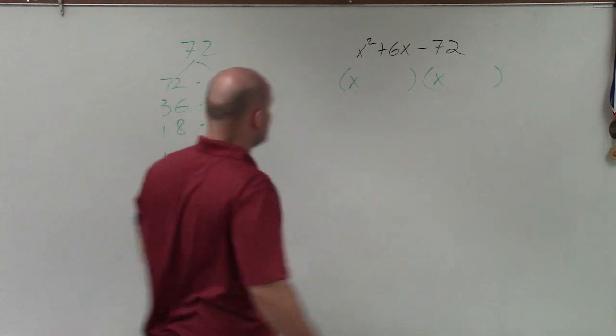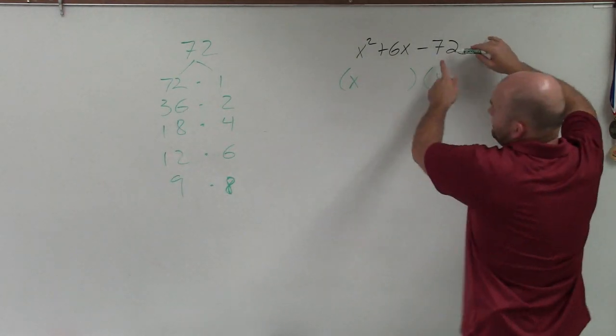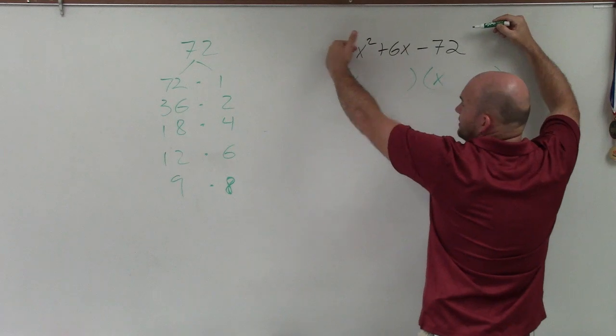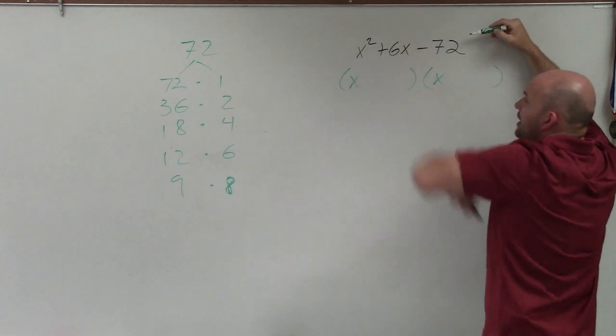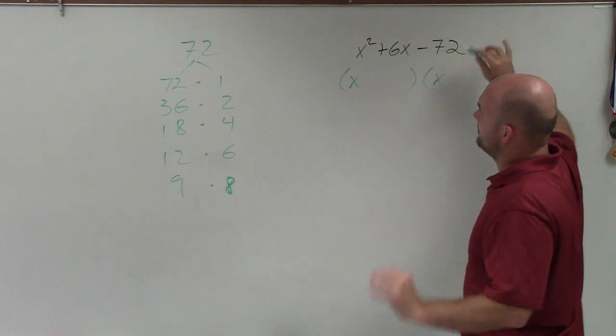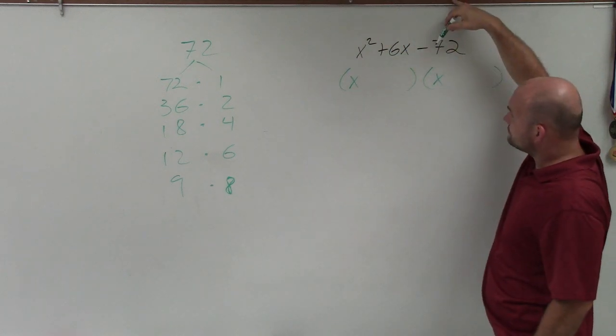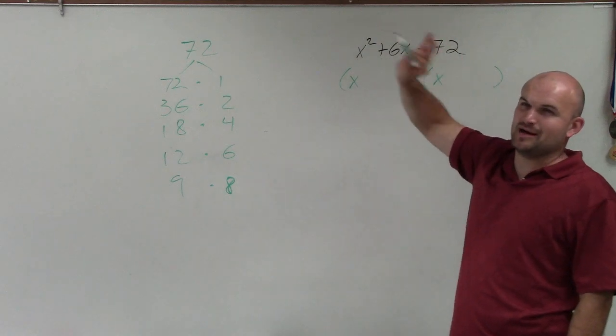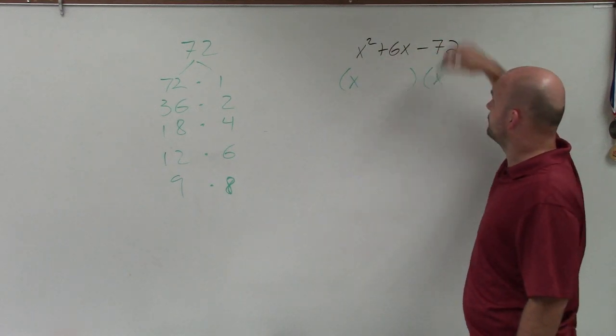So there's a lot of different ways that I can multiply to give me negative 72, right? There's only one way to get x squared. That's x times x. You could look at the negative, but we're not going to worry about negatives right now, just because it's going to make the problem much more complicated than we really need to work through.